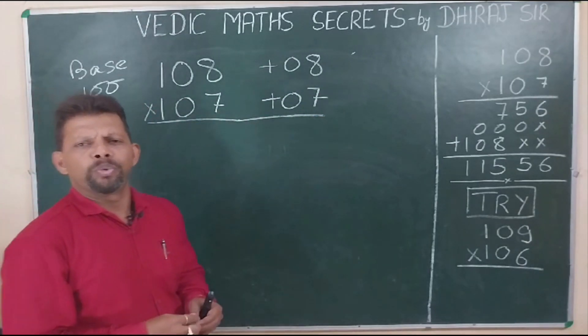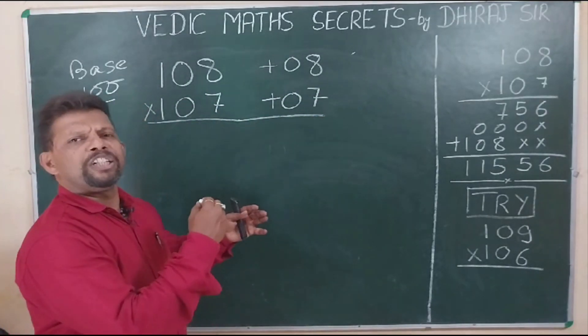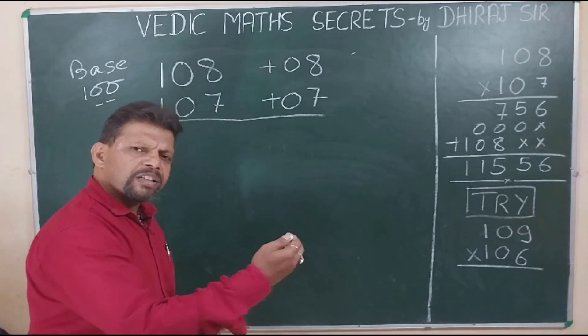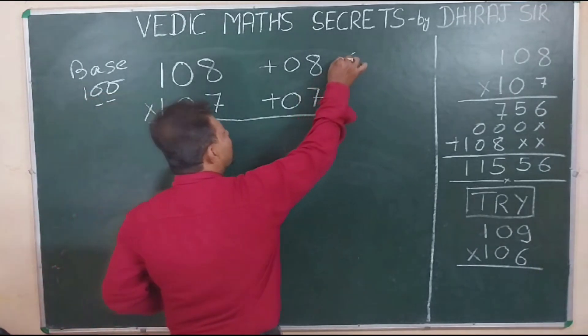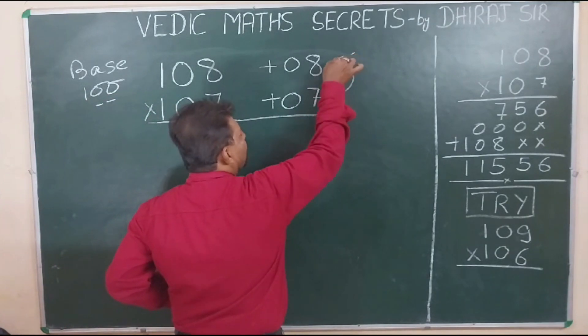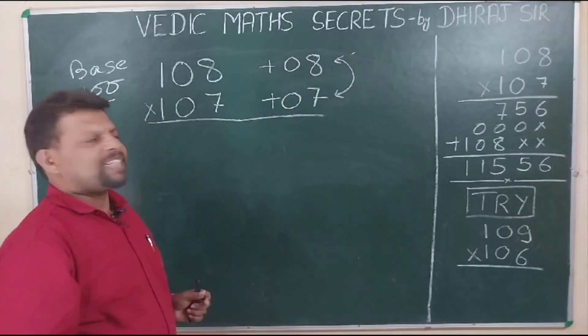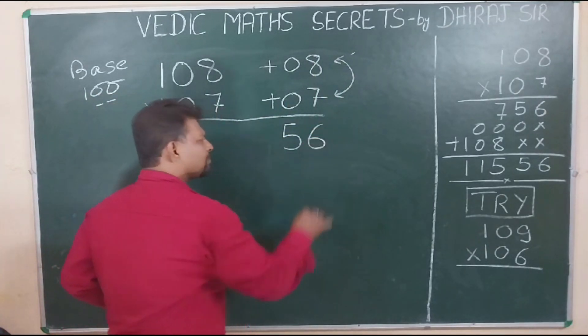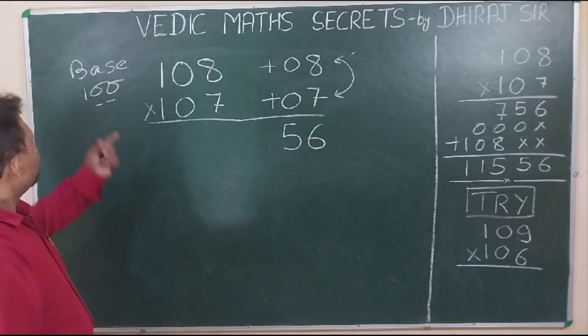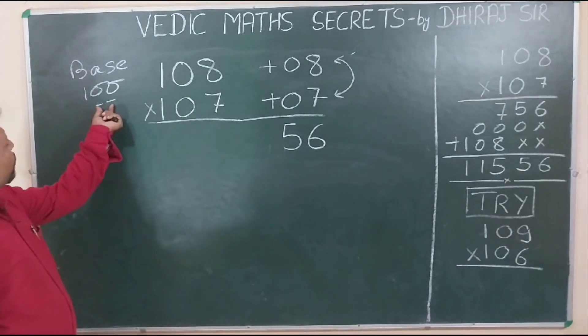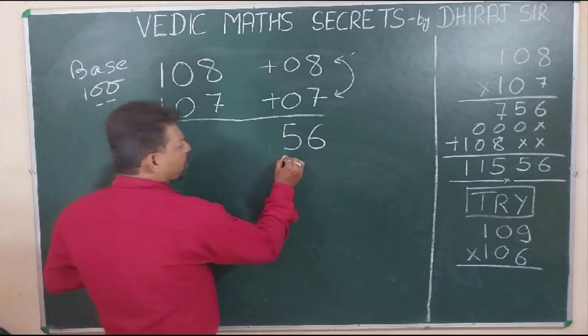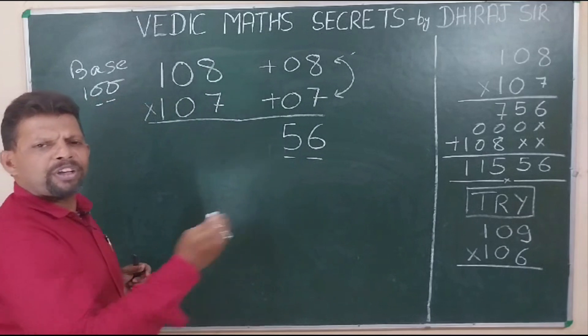As I had already told you that you get the answer in two parts. In order to find out the right part of the answer, you need to multiply these two digits. And when you multiply 8 by 7, your answer would be 56 because the base 100 has two zeros. So you need to keep only two digits here on the right part of the answer.